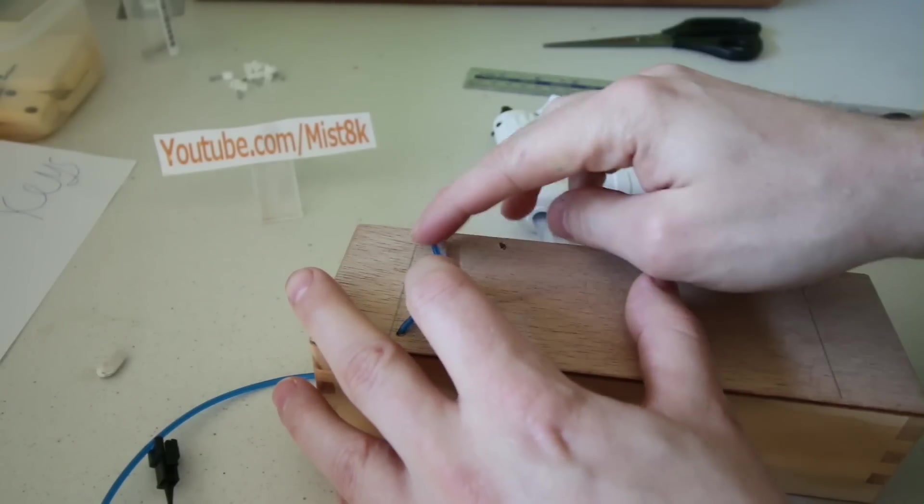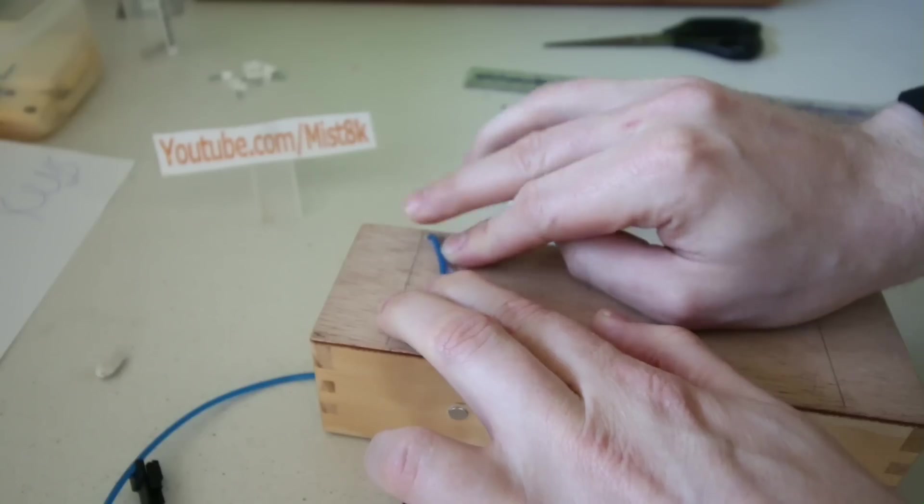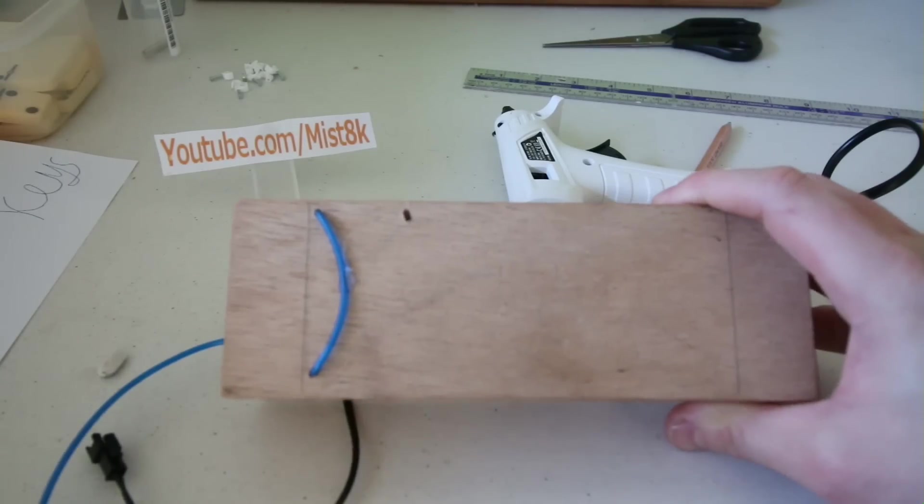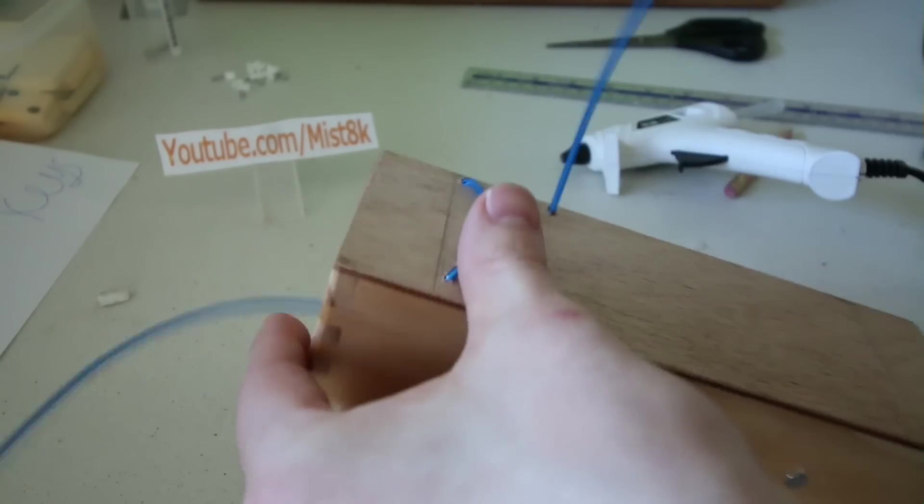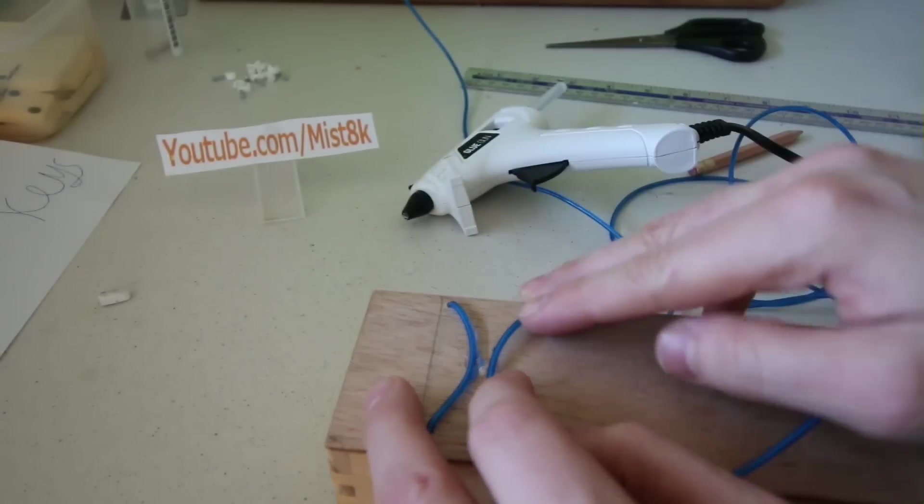I then pulled the wire through the third hole from underneath. This was then glued into place to create the K.